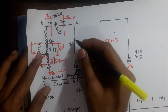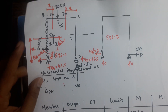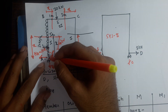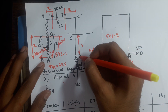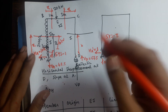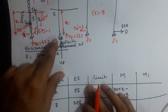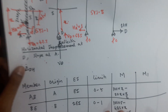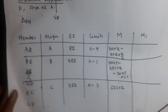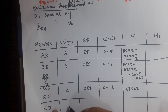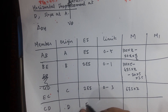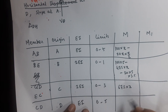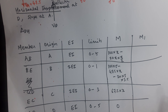For member CD: I take D as the origin because that makes it easier — from D to the section only one reaction is there, and its perpendicular distance with respect to the section is zero, so no moment is created. Member CD: origin D, EI = EI, limit 0 to 5, and M = 0.